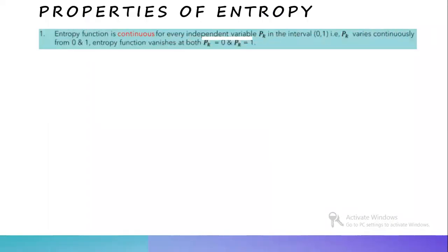The first property of entropy is that the entropy function is continuous for every independent variable pk in the interval 0 to 1. That is, pk varies continuously from 0 to 1. The entropy function vanishes at both pk equal to 0 and pk equal to 1. This is the first property — it is continuous.